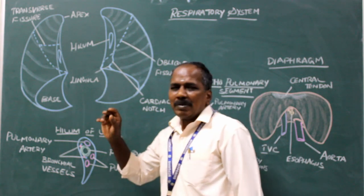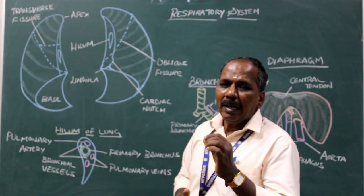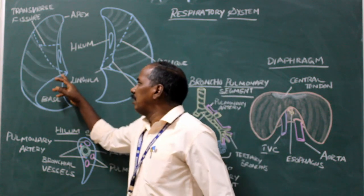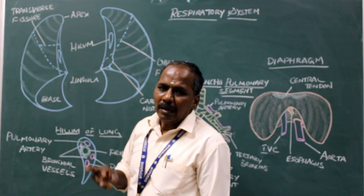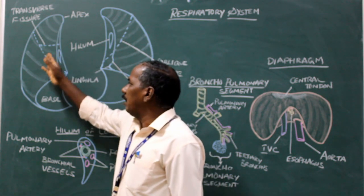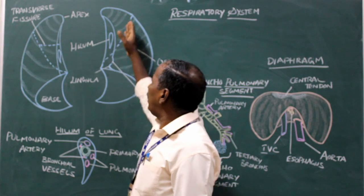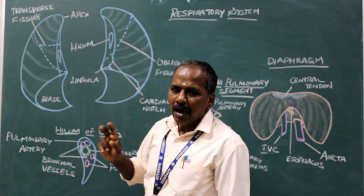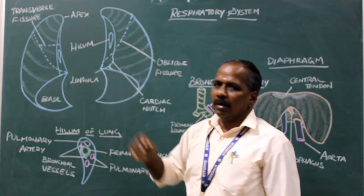Lobes and fissures of the lung. The right lung has two fissures — oblique fissure and transverse fissure — and three lobes: superior lobe, middle lobe, and inferior lobe. The left lung has one fissure — oblique fissure — and two lobes: superior and inferior lobe.